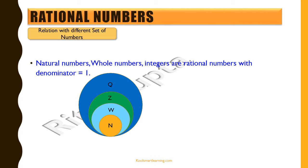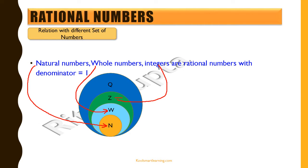Now let's try to see it pictorially. The smaller circle representing N is basically the set of natural numbers. The bigger light blue circle represents all the whole numbers, and whole numbers are nothing but natural numbers plus zero. The green circle represents Z, all the integers, and integers are a superset of natural numbers and whole numbers because they contain the negative numbers as well.